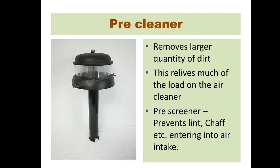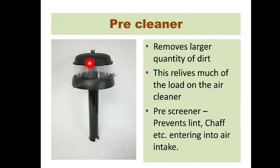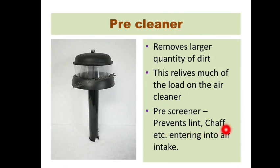The pre-cleaner is a very simple device we observe attached to tractors or many stationary engines. It has a bowl inside and the air enters from the side of the bowl. It removes large quantities of dirt using centrifugal force, causing large particles to settle. This relieves much of the load on the actual air cleaner — so only fine impurities transfer to the actual air cleaner. The pre-cleaner prevents lints, chaffs, etc. from entering the air intake system.